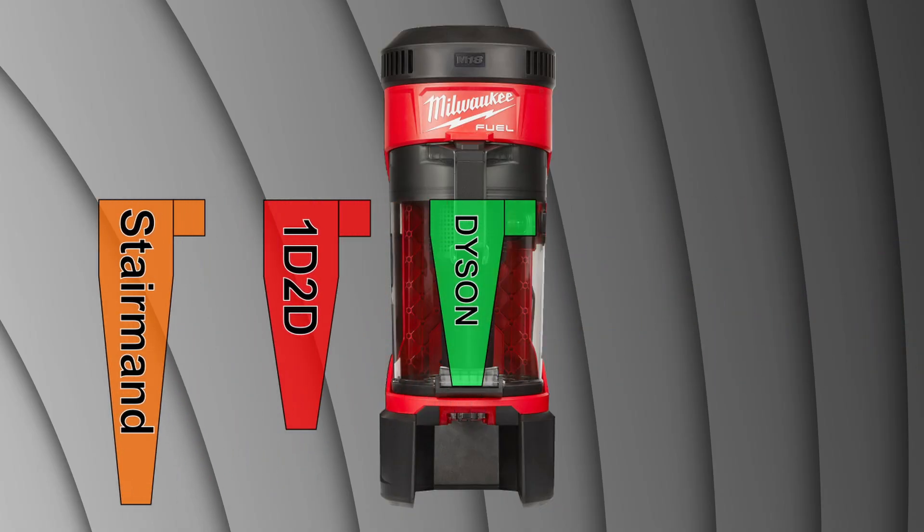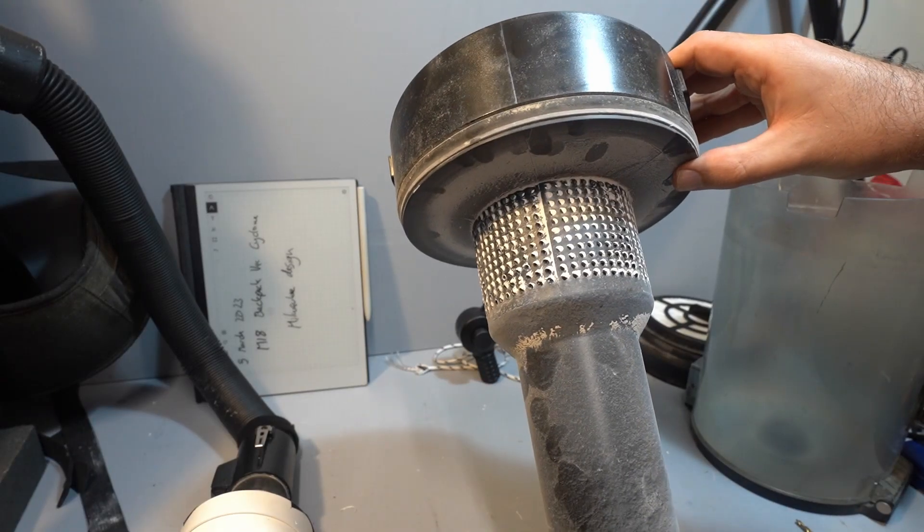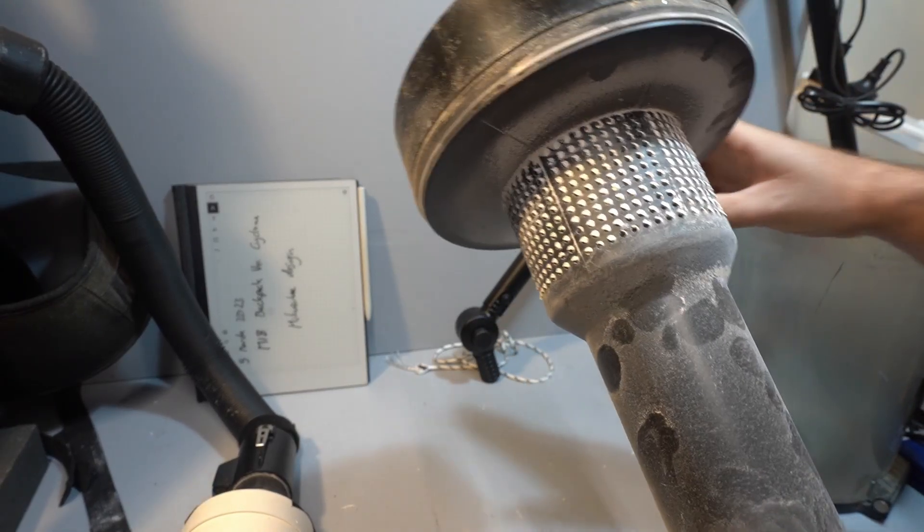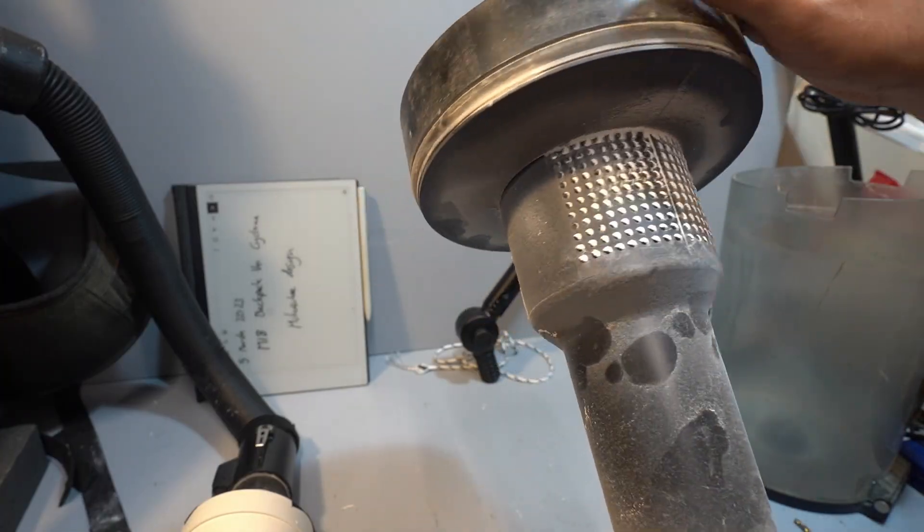Dyson vacuums use a much shorter design but even that leaves no space for a collection chamber. This inner cone just isn't a great shape for a cyclone so we're kind of stuck with polishing a turd.